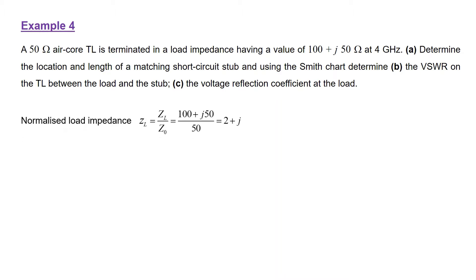The first thing we do is work out the normalized load impedance, which by definition is simply the load impedance divided by the characteristic impedance of the transmission line, which is 50 ohms. So we get a value of 2 plus J1. That's the normalized load impedance.